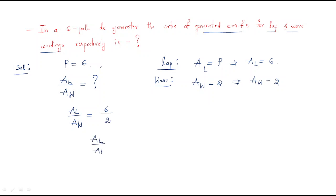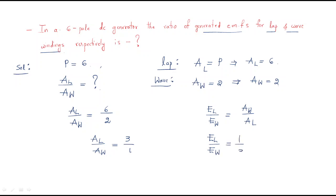So A_L by A_W equals six by two, which gives three to one for the number of parallel paths. The relation between generated EMF and parallel paths means E_L by E_W equals A_W by A_L, which is the reverse. So E_W by E_L equals one by three, meaning the EMF for lap winding to wave winding is one to three. Simply take the parallel paths, substitute the values, and you get the answer.